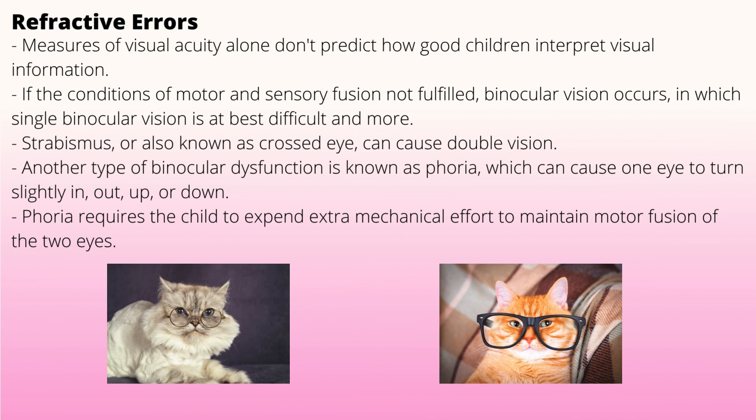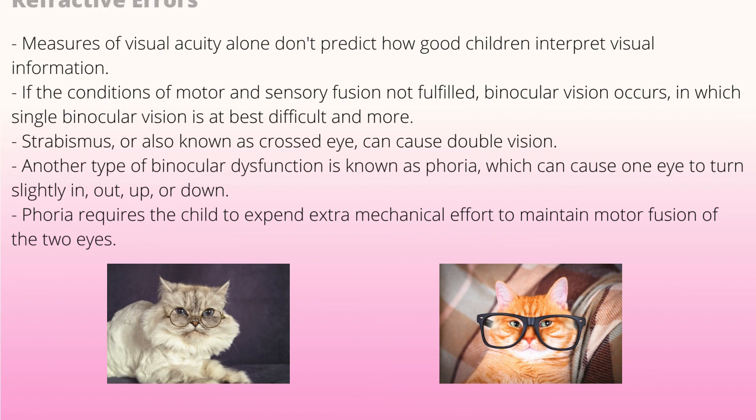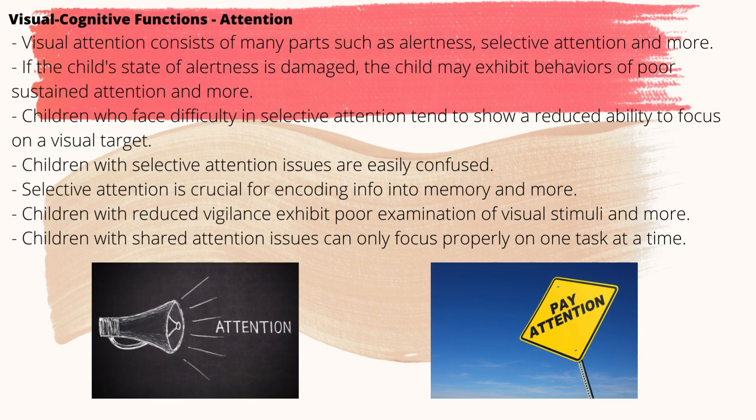Strabismus, also known as crossed eyes, can cause double vision. Another type of binocular dysfunction is known as phoria, which can cause one eye to turn slightly in, out, up, or down. Phoria requires the child to exert extra mechanical effort to maintain binocular fusion of the two eyes, whether focusing near or far.